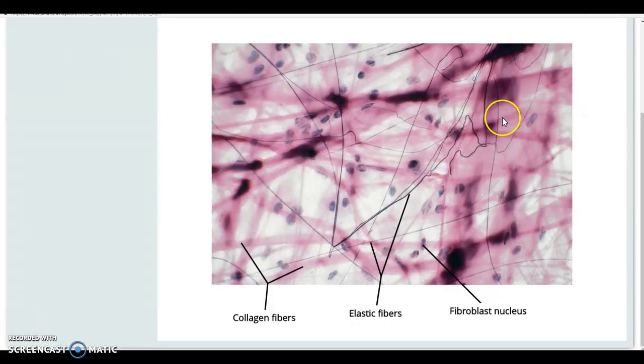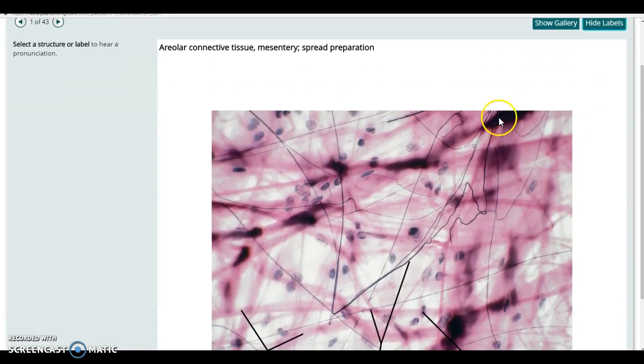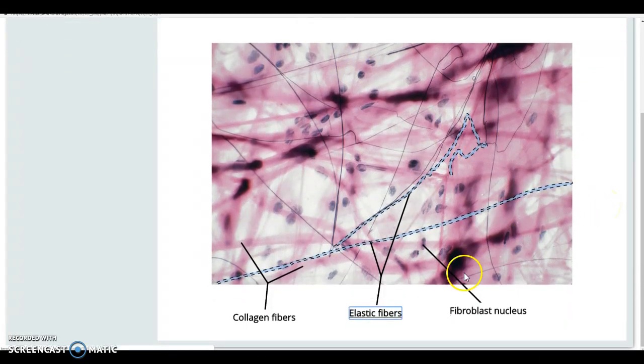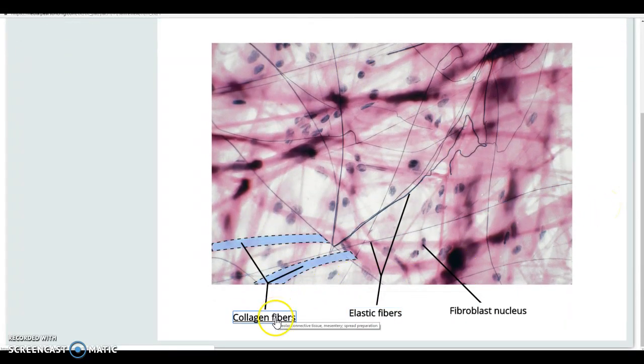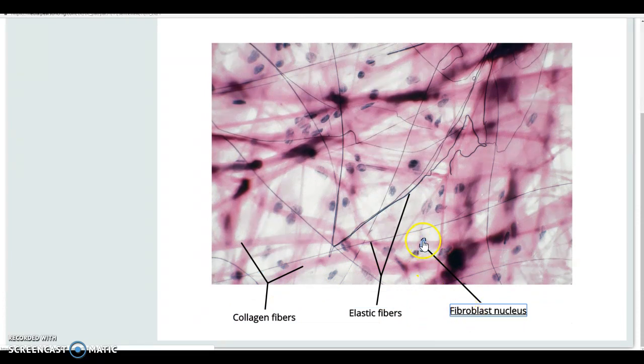This first one is that general generic areolar connective tissue where you can just see some of those thicker collagen fibers. You can see the fibroblasts, which are the elongate cells sitting right on the fibers. If you see any rounded cells, those are probably immune cells, especially if they're not sitting right on the fibers.